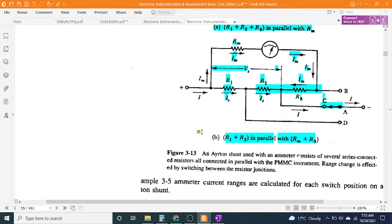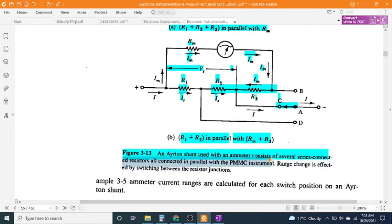Figure 3-13 shows an Ayrton shunt used with an ammeter consists of several series connected resistors all connected in parallel with the PMMC instrument.